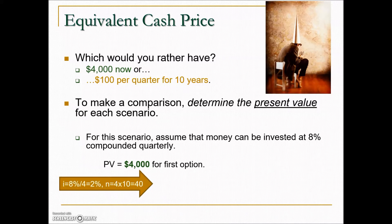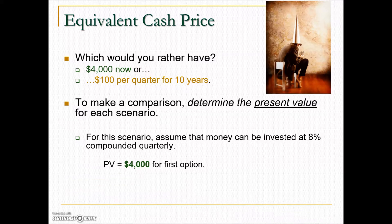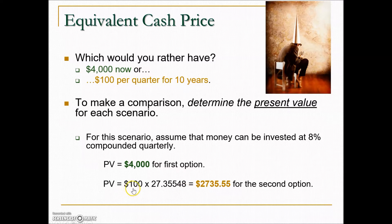To find the present value of the second option we need the compounding interest per period: 8% divided by 4 because it's compounded quarterly gives us 2%. The total number of compounding periods is 4 per year for 10 years, which is 40. Looking up those two values to find the intersection on the present value annuity table, we get a multiplier. Multiplying it by the regular deposit of $100, the lump sum equivalent today is $2,735.55.